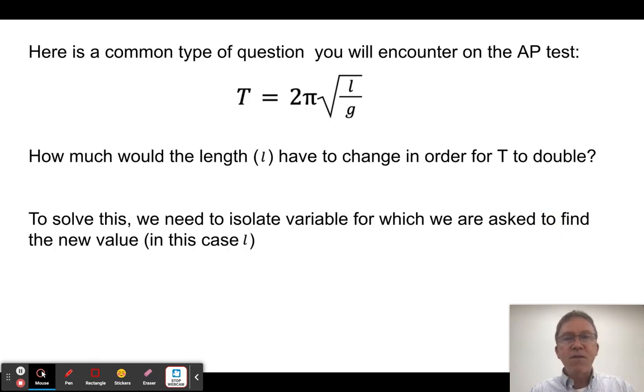In order to solve a problem like this, this period of spring problem, we'll present it with something that's going to say, like, how much would the length have to change in order for T to double? Oh, how do I approach this? It's actually quite simple. The trick is, I want to simply isolate the two variables that matter, and just get rid of all the other ones.